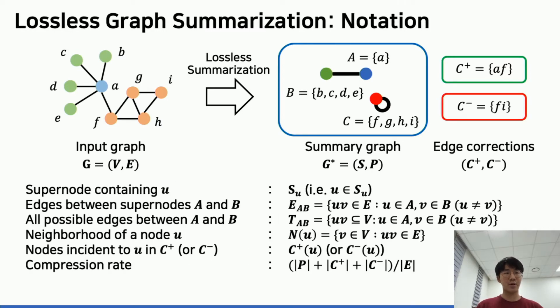Here is some notation for the presentation. We use S_u to denote the super node containing node u. An undirected edge is denoted by concatenating two nodes like uv. All edges in the original graph between two super nodes are denoted as E_AB, and T_AB denotes all possible edges. The compression rate is defined as the ratio of the description cost to the number of edges in the original graph.